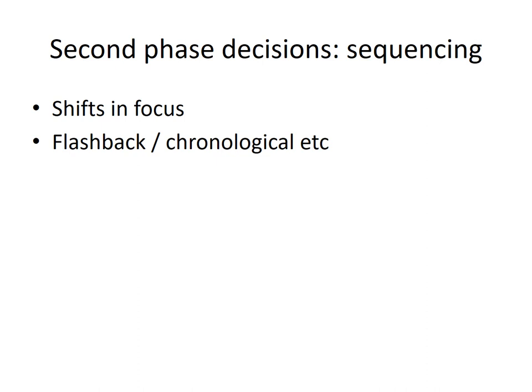We're going to move on now to the second phase of decisions. We had those bigger picture decisions at the beginning. Now we're really looking at the choices that the writer has made within this particular extract in terms of how they have structured it — what I'm calling the sequencing. We're going to be looking at things like shifts in focus, how it opens, how it begins and develops into the middle, how it ends, and any evidence of flashback, chronological order, or features like that.